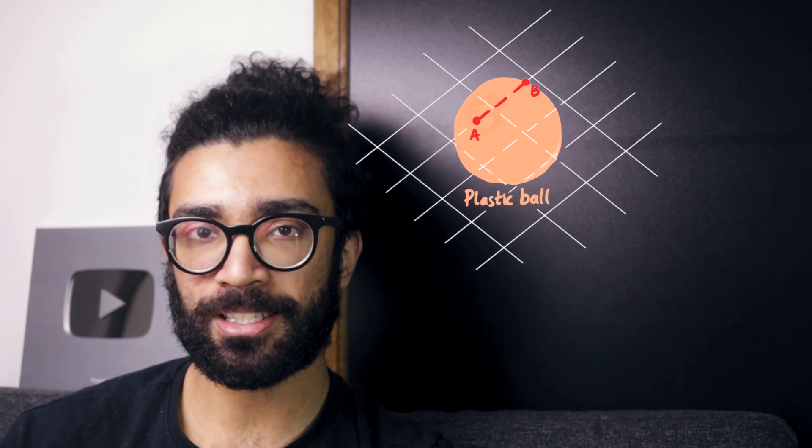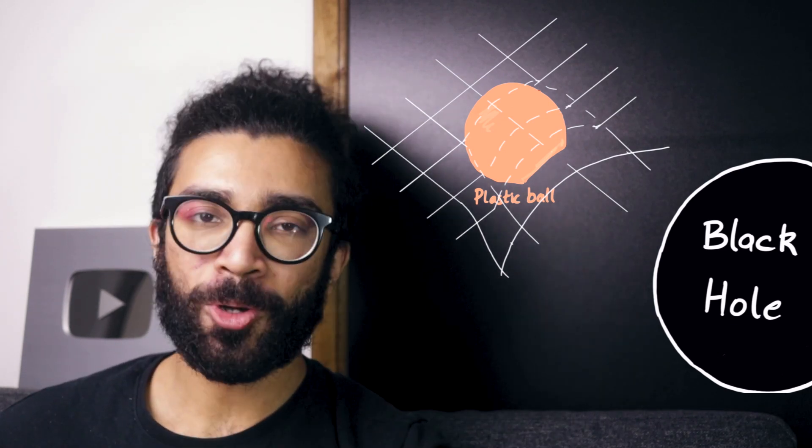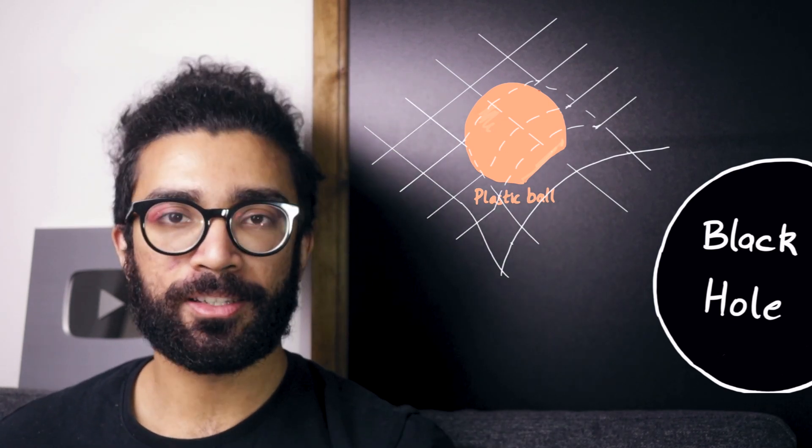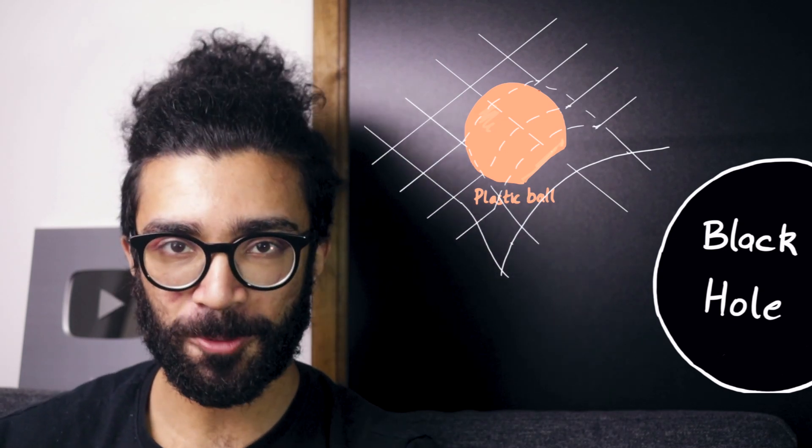But what if we now take this plastic sphere and place it somewhere in a region of warped space-time? Maybe somewhere close to like a black hole, for example. Say it's not near enough to fall into the event horizon, but is near enough to experience the space-time warping effects of the black hole.